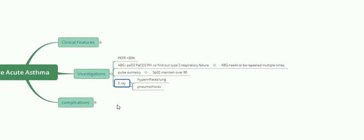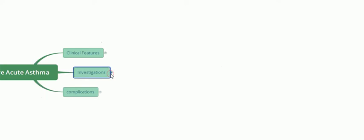Chest X-ray is not required for diagnosis per se, but in severe acute asthma it will show a hyperinflated lung. More importantly, chest X-ray is needed to check for pneumothorax, which is a complication of this condition.